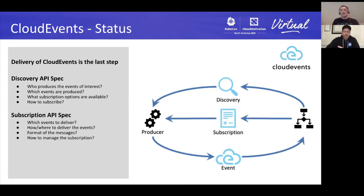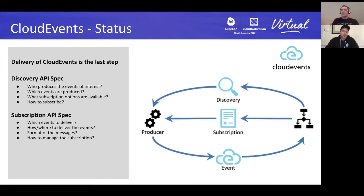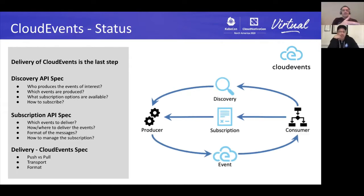Next, you have the Subscription API itself, which is how you actually do the subscription. Where do you send the subscription request? How do you tell it you want events delivered over HTTP versus some other mechanism? What's the format of the messages? How can you filter the messages? These are all things you'd naturally expect from a discovery and subscription API, but they're not written down anywhere in an interoperable format, so we want to address those concerns. That's what we're really focusing on in the CloudEvents group now.